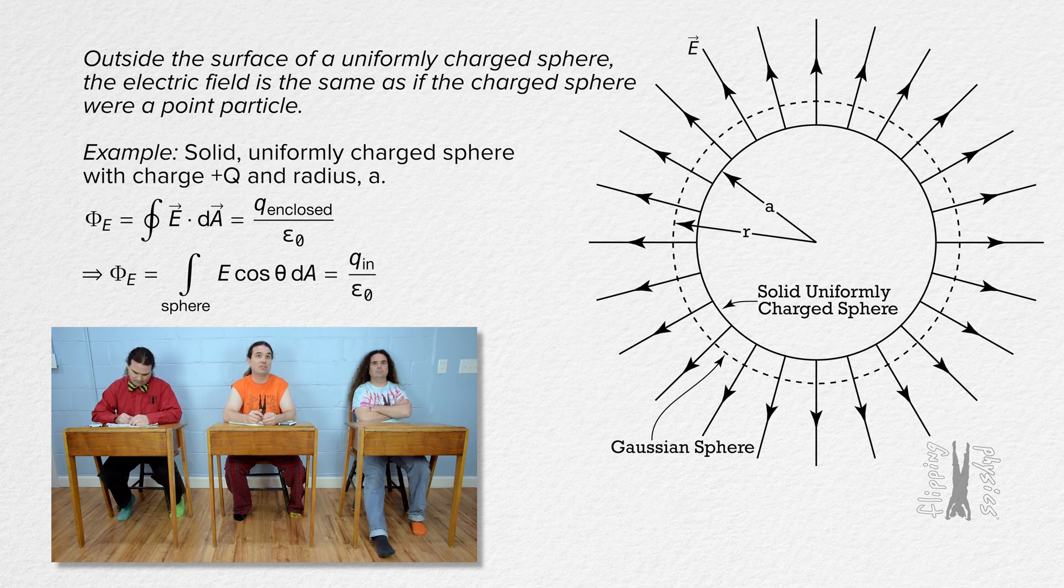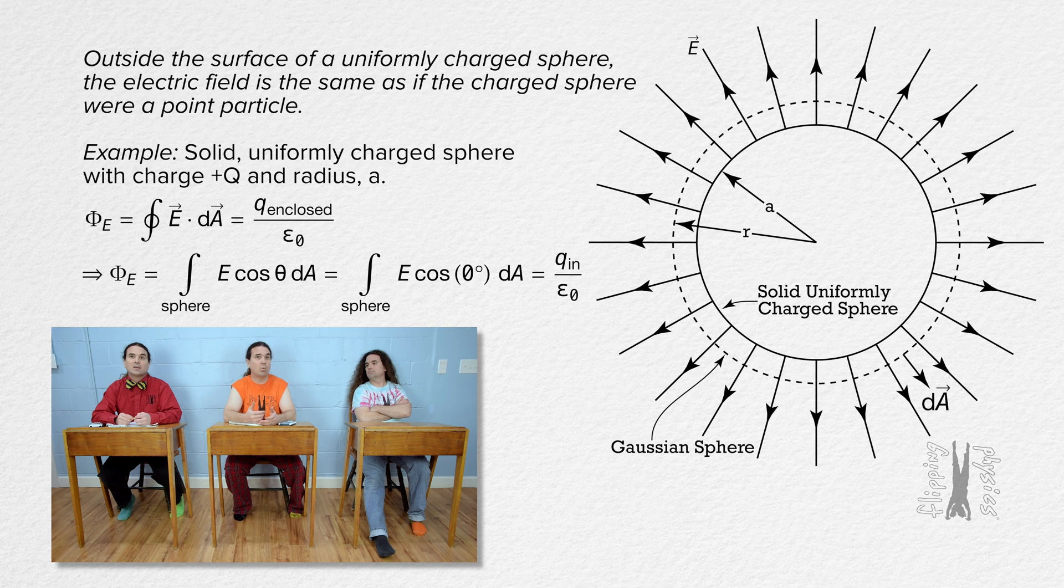The direction of the electric field is always outward and the direction of every infinitesimal area dA is also outward. The angle between those two directions is zero degrees. The cosine of zero degrees is one.